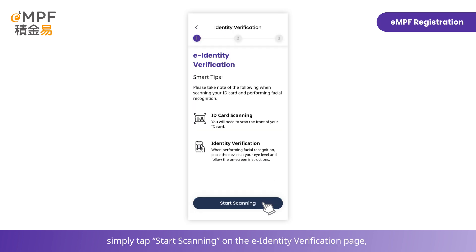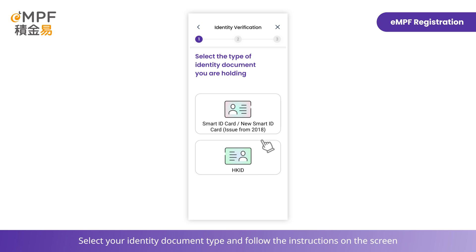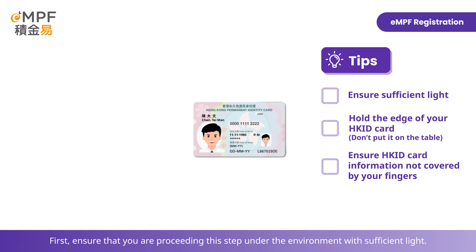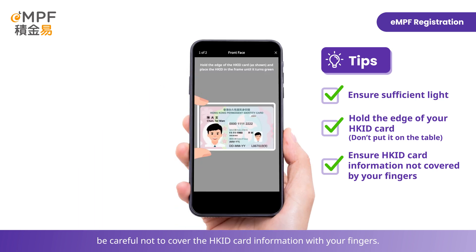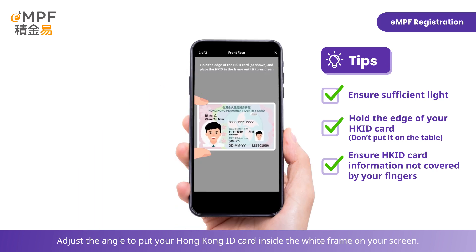Select your identity document type and follow the instructions on the screen to scan your Hong Kong ID card and proceed to facial recognition. First, ensure that you are performing this step in an environment with sufficient light. Hold the edge of the Hong Kong ID card, being careful not to cover the card information with your fingers. Adjust the angle to put your Hong Kong ID card inside the white frame on your screen.